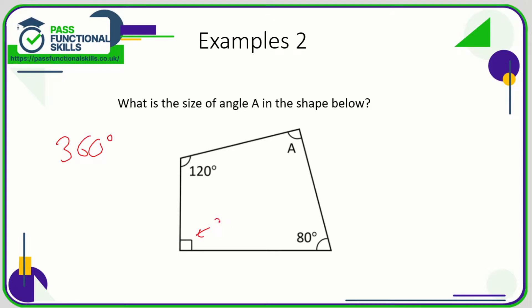120 plus 80 is 200, plus 90 is 290. So the difference between these two values is angle A. So angle A is 70 degrees.